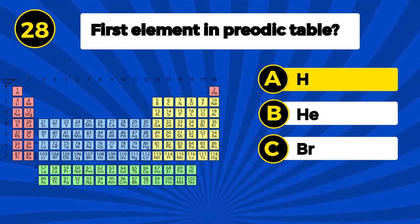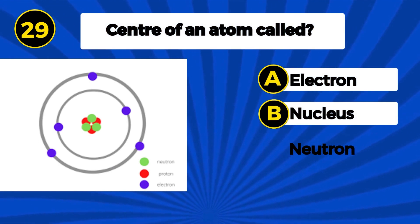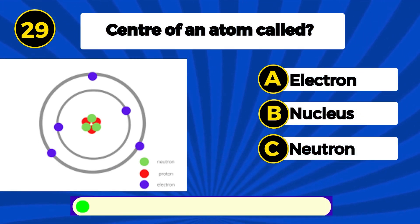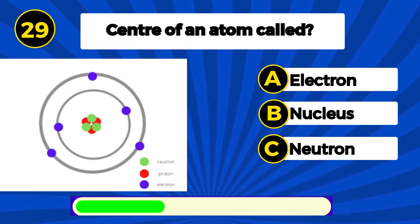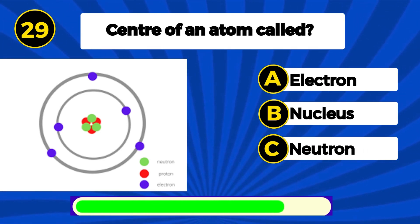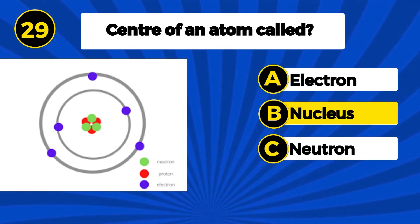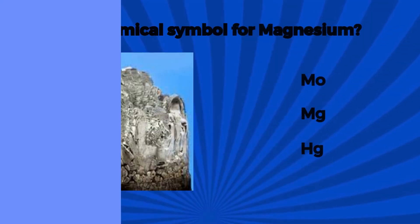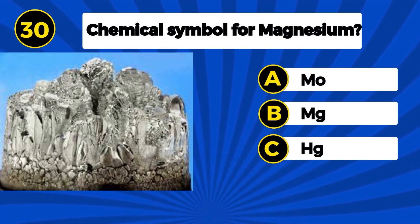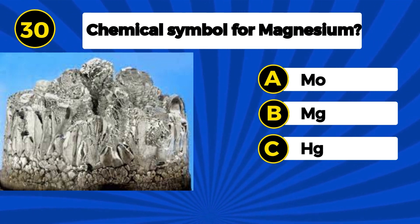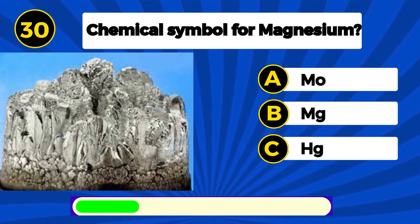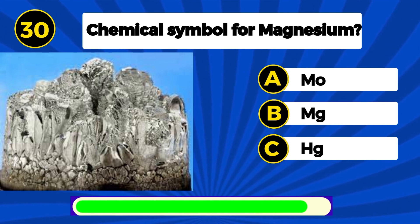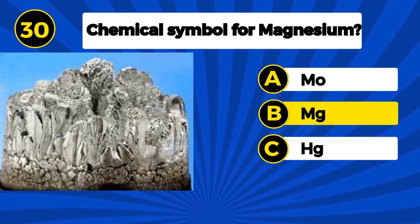Hydrogen. Center of an atom is called? Nucleus. Chemical symbol for magnesium? Mg.